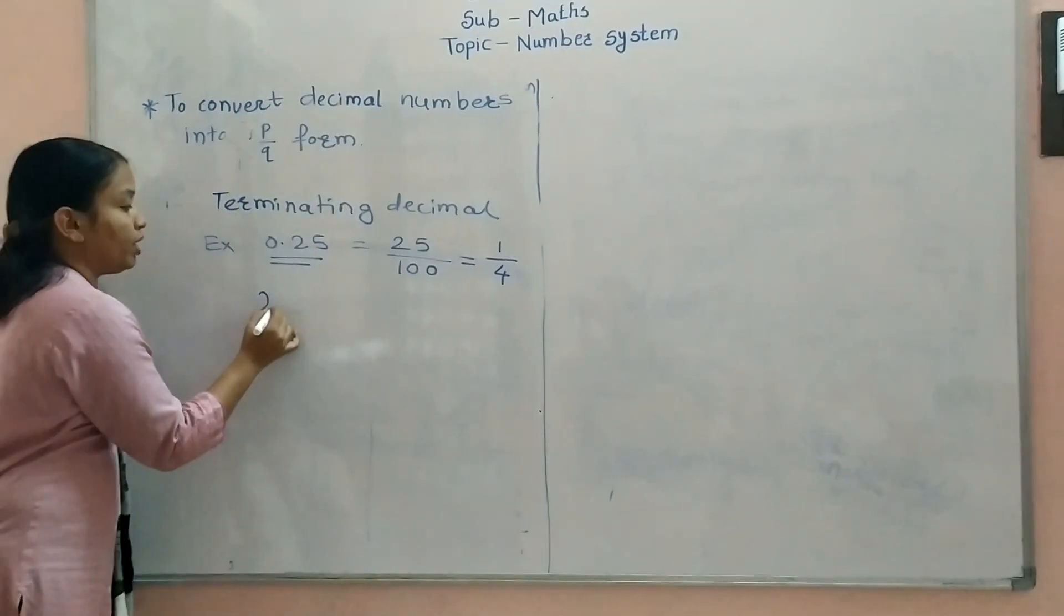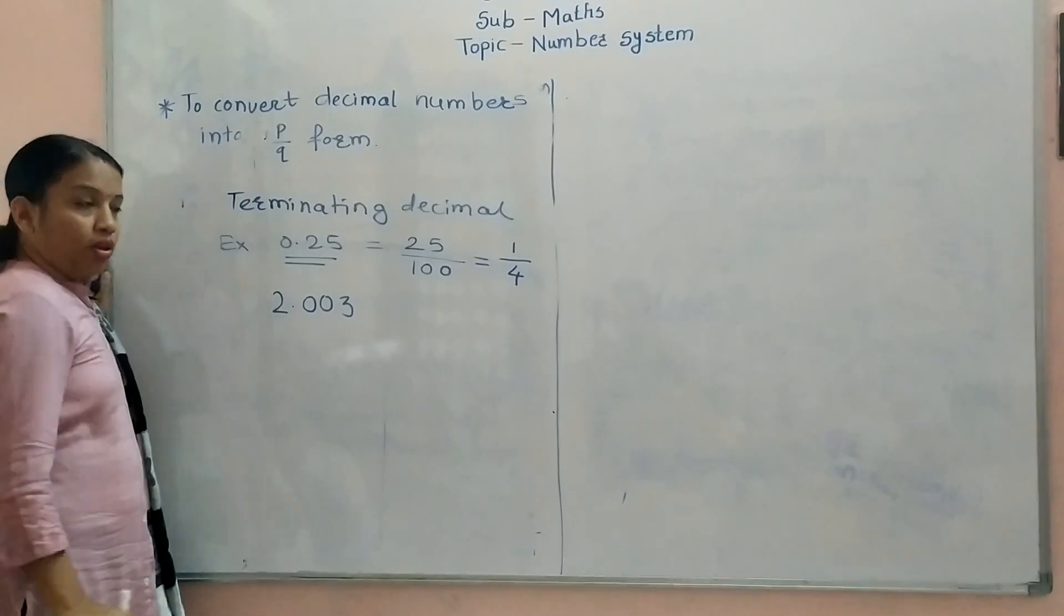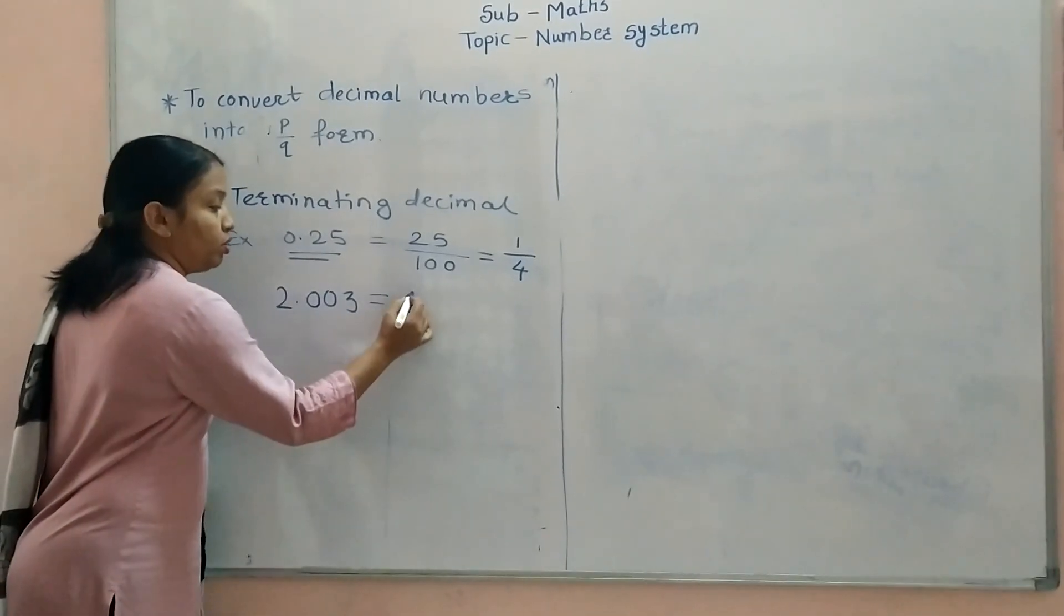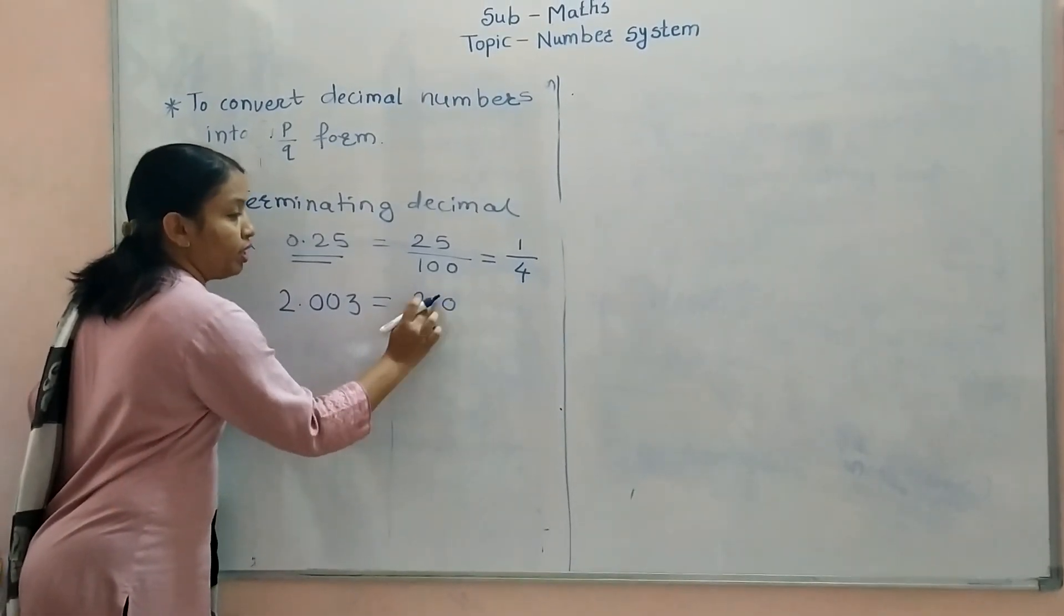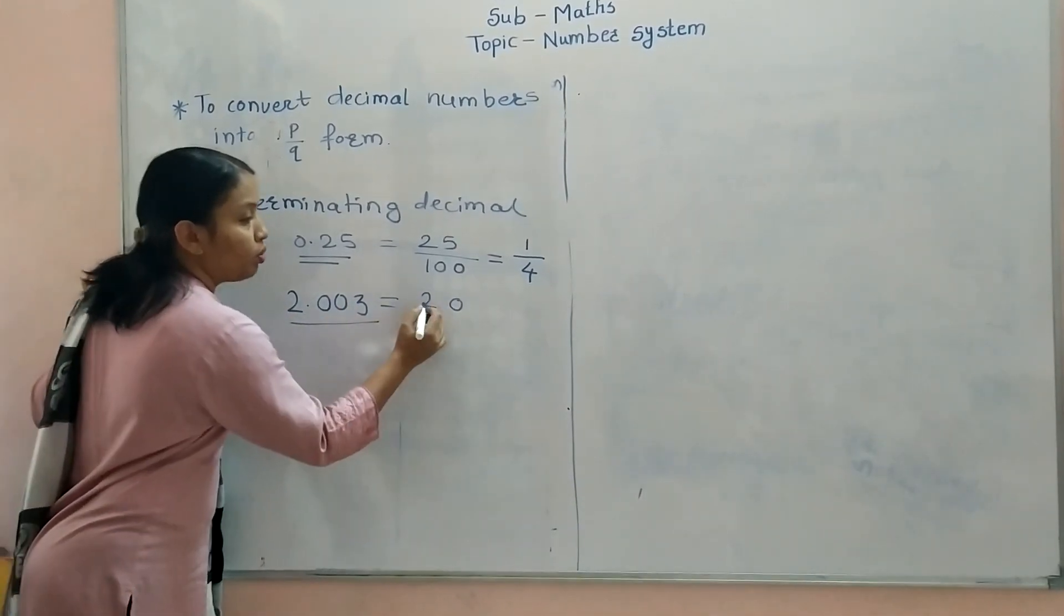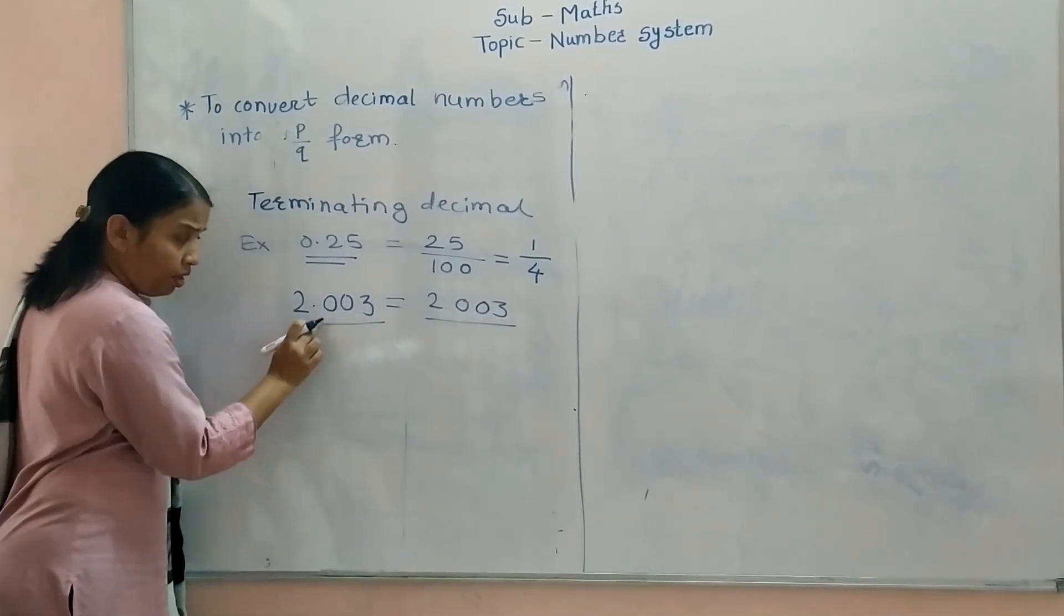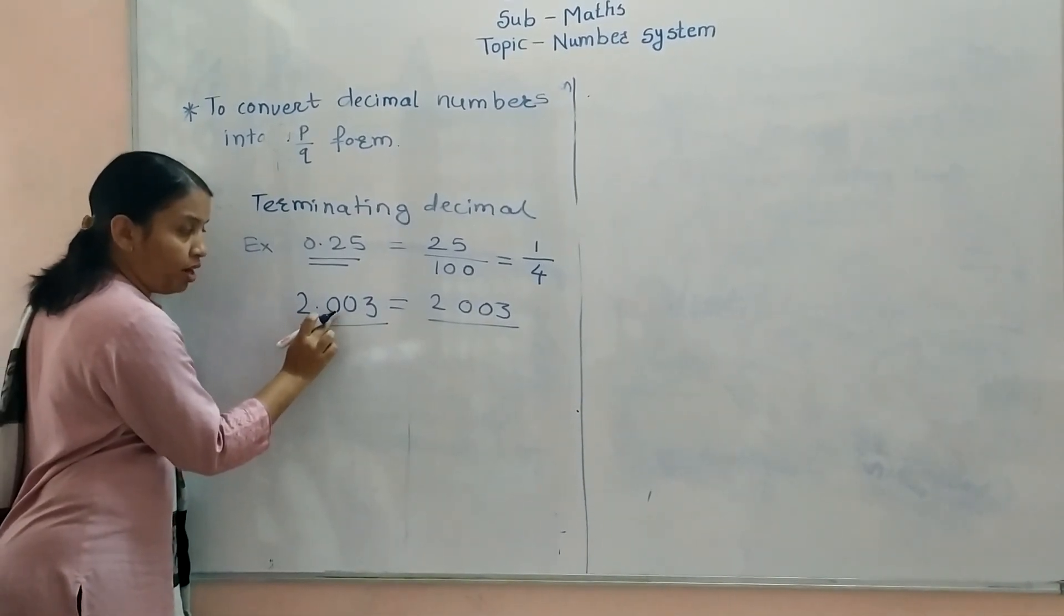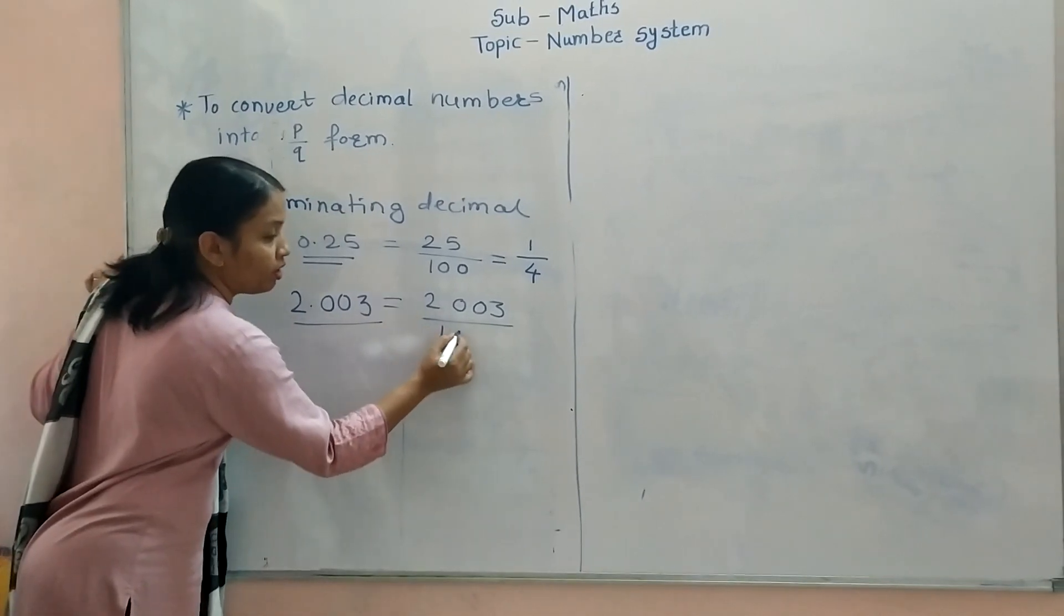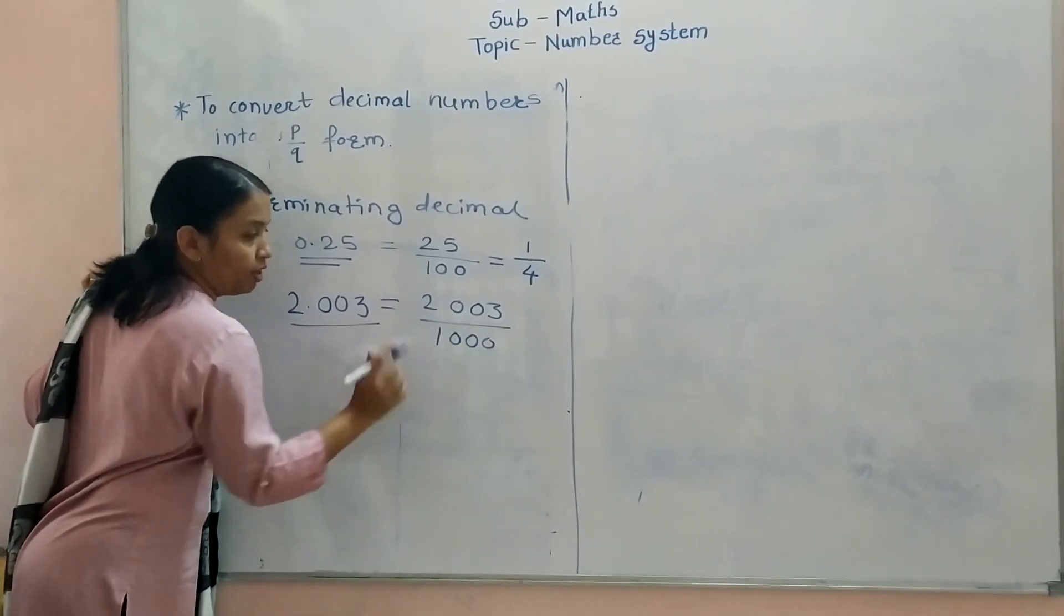Another example, you can take 2.003. Now, 2.003. Write the number as it is: 2003. Then, how many decimal places are there? 1, 2, 3. Therefore, write 1 with 3 zeros in front of 1. This is already in the reduced form.